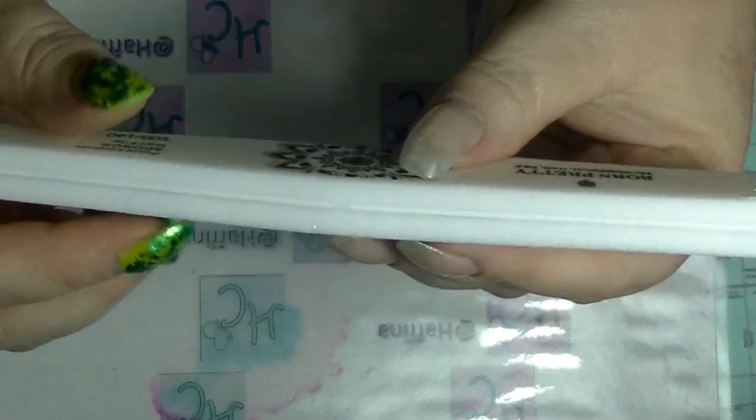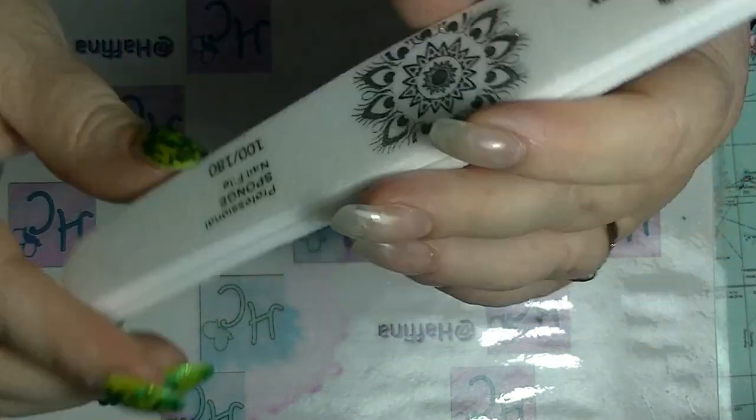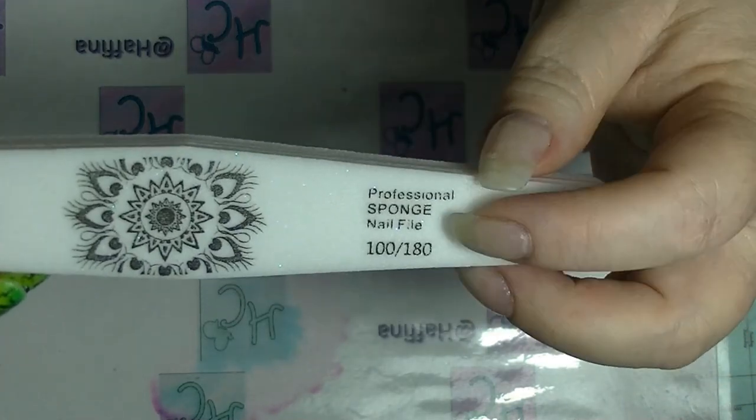It's quite thick. It's spongy, so it's got some give to it. That's why it says it's a sponge file.